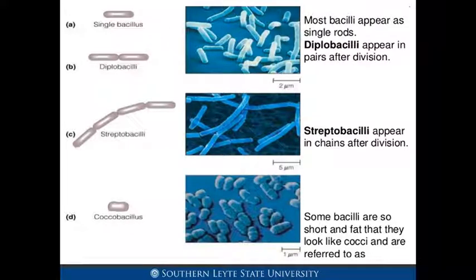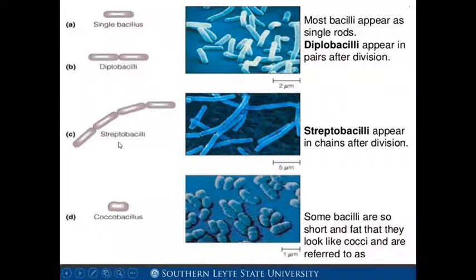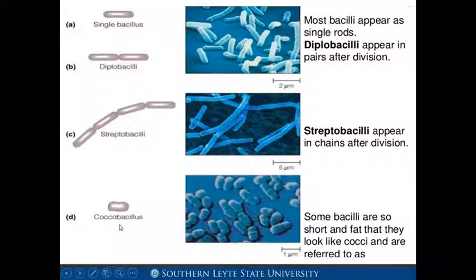First, we have bacilli. Since bacilli only divide across their short axis, there are fewer groupings. In letter A, we can see the single bacillus — most bacilli appear as single rods. In letter B, we have diplobacilli, which appear in pairs after division. In letter C, we have streptobacilli, which appear in chains after division.